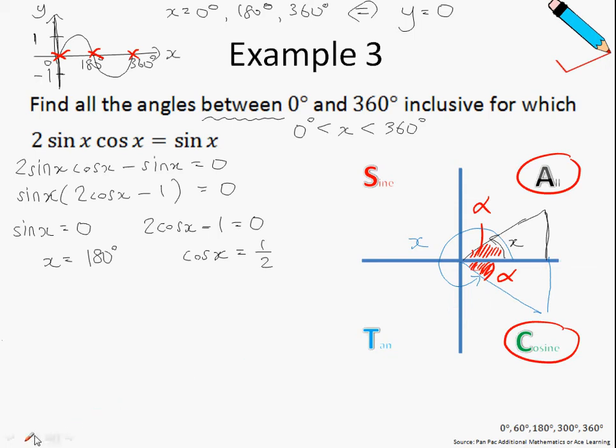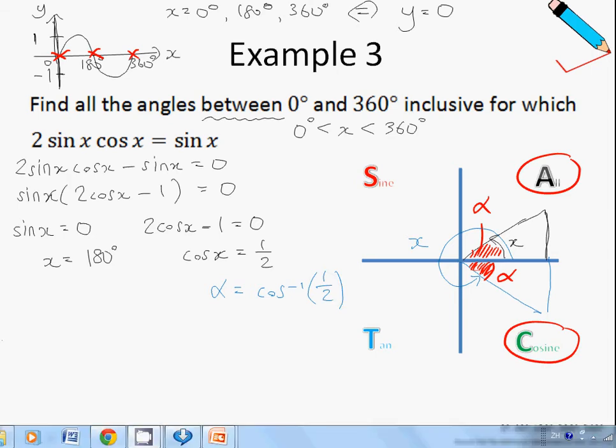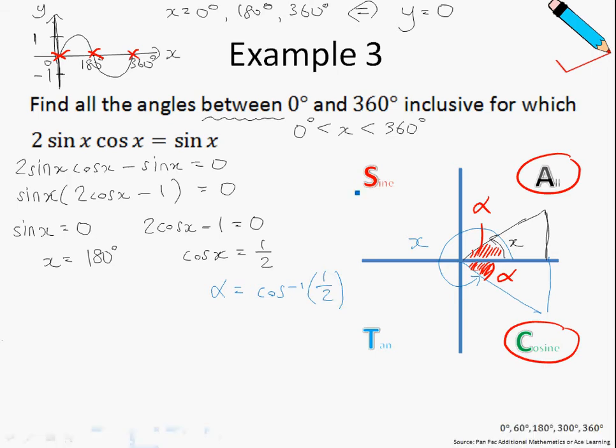Let us find alpha first. Alpha is just cosine inverse of half. If you recall in the chapter of special angles, cosine inverse half is just 60 degrees; it's a special angle.